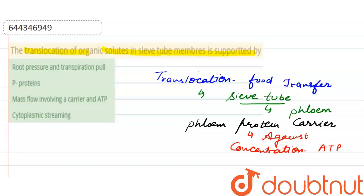So at that time, here mass flow occurs. This mass flow involving a carrier and ATP. This carrier is a protein membrane. So option 3rd is the right answer of your question.